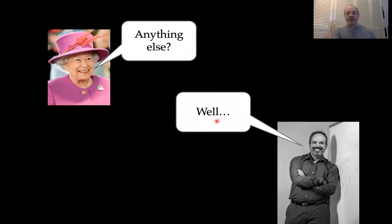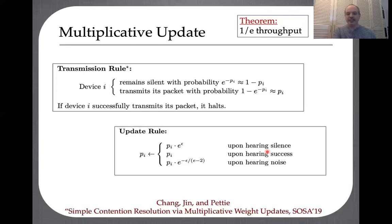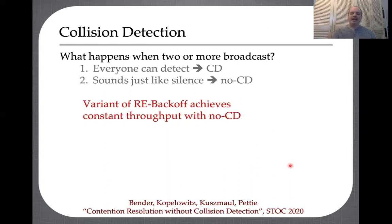At this point I'm running out of time. There's a bunch of recent and exciting work. One paper I'd point to: we've talked about one approach with a back-off/back-on protocol. A year later, Chang, Jin, and Petty simplified this and showed there's just a simple multiplicative update rule — they maintain some probability π which they increase by e^ε and decrease by e^ε on hearing silence and hearing noise. This leads to very similar performance in some situations. Another direction: we've been assuming you can detect when there's a collision. If you can't detect a collision, what can you do? Recent work by Bender, Kevelowicz, Kuzmal, and Petty showed that using a variant of re-backoff, you can get constant throughput with no collision detection.